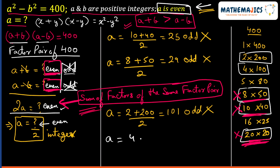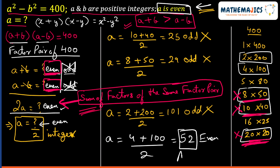Finally, testing 4 and 100: a = (4+100)/2 = 52, which is even. This satisfies all the given conditions. Therefore, our final answer is a = 52. This was the only factor pair that satisfied all the conditions in the question.